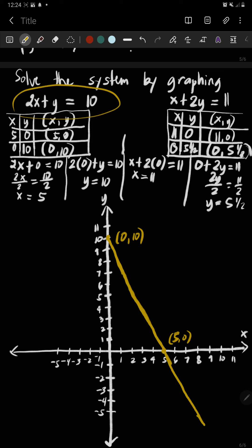So my line is not really perfect because I could not use a ruler here. So label this as 2x plus y equals 10.